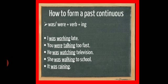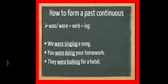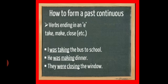Now discuss about how to form a Past Continuous Tense. Sentence Formation: subject with was or were plus verb plus ing. Like, I was working late, you were talking too fast, he was watching television, she was walking to school and it was raining. Whereas, we use were with we, you, they. We were singing a song, you were doing your homework and they were looking for a hotel.